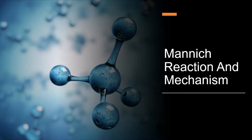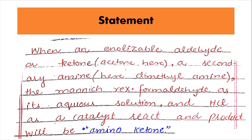Hello everyone, this is my YouTube channel Chemical Freelancers. In today's video we will talk about the Mannich reaction and its mechanism. The Mannich reaction is the formation of an amino ketone. This amino ketone forms when an enolizable aldehyde or ketone — for example acetone — and a secondary amine, such as dimethylamine, react in the presence of formaldehyde in aqueous acidic solution with HCl as a catalyst.